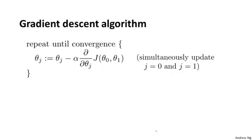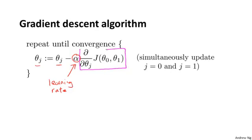Here's the gradient descent algorithm we saw last time. This parameter alpha is called the learning rate, and it controls how big a step we take when updating parameter theta j. And this second term here is the derivative term.